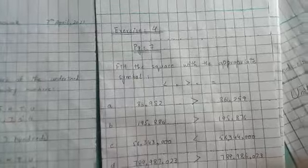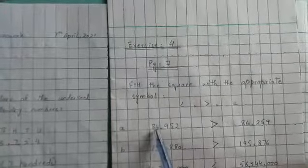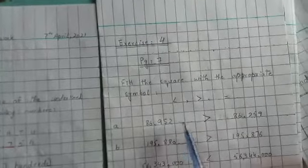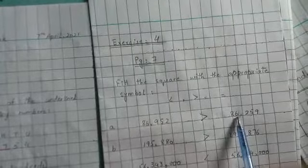The first part is 86,952 and the other number is 86,259. As you know, 9 is greater than 2, so you put the greater sign here.